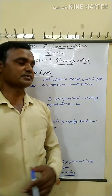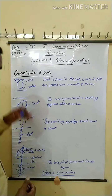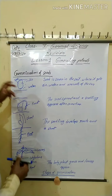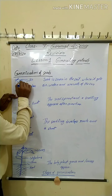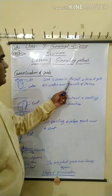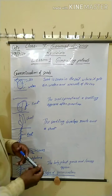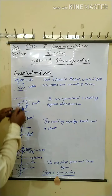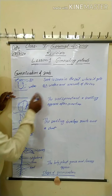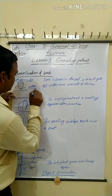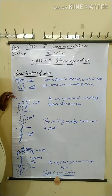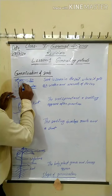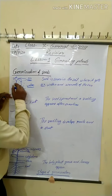Now the next topic: germination of seeds. How do seeds germinate? There are four stages. First stage: a seed is sown in the soil, where seeds get air, water, and warmth. Air and water are available in the soil, and warmth comes from the sun. Then they start to germinate.